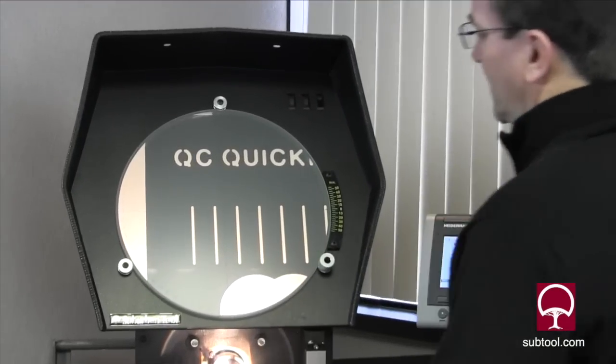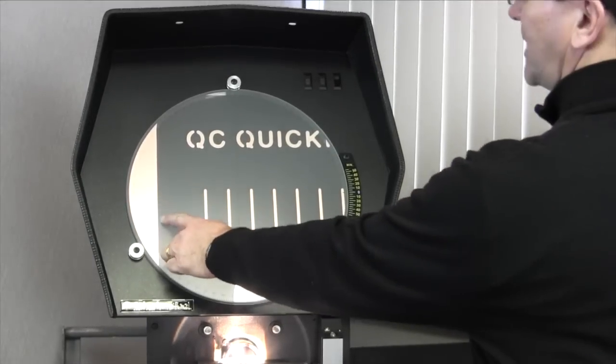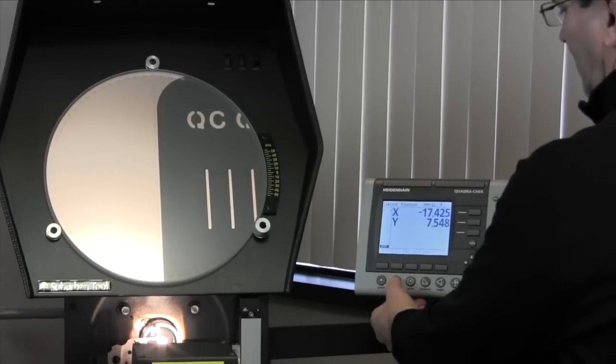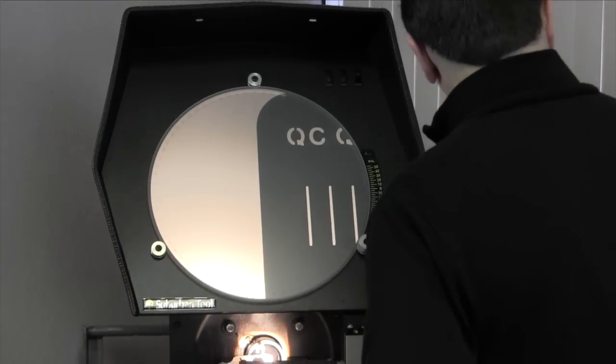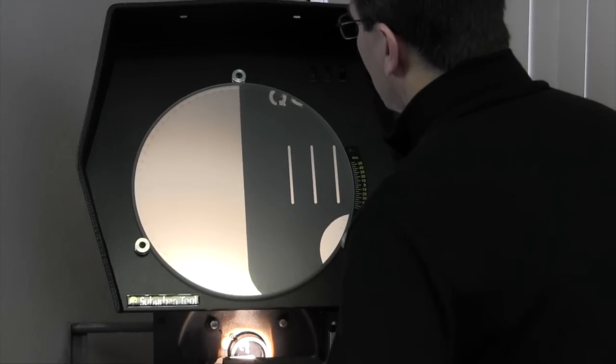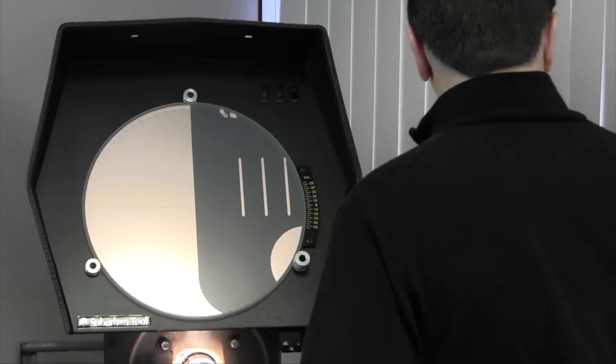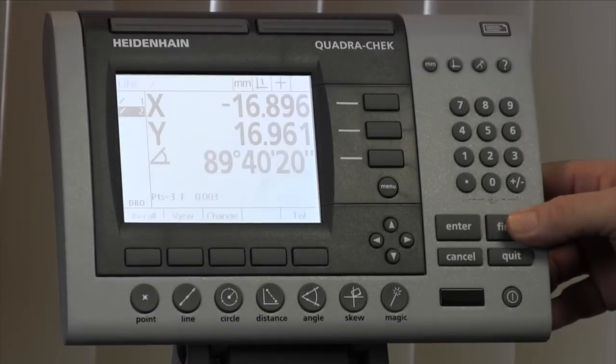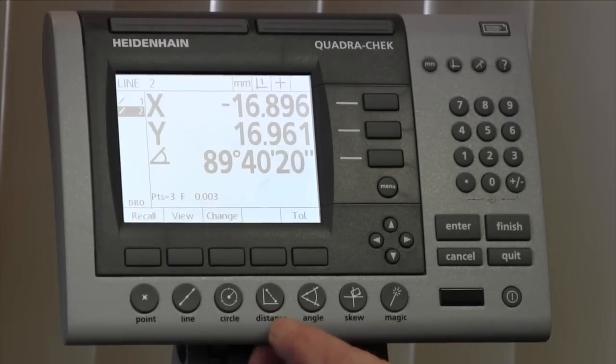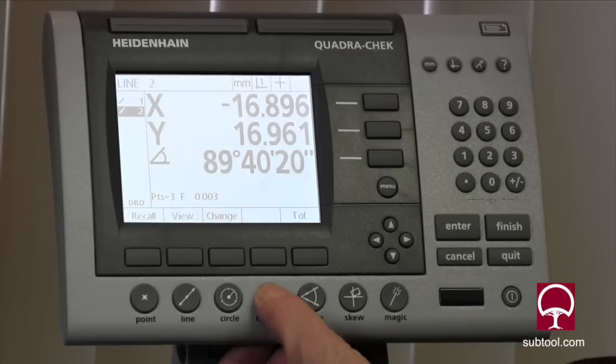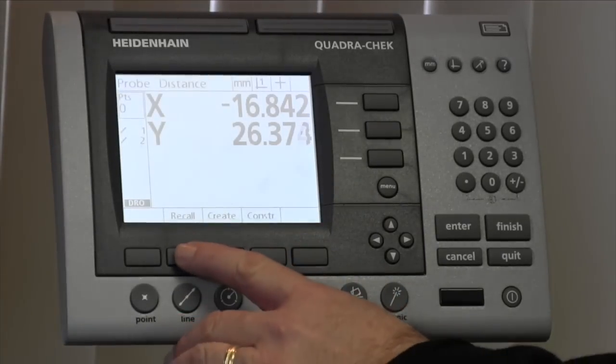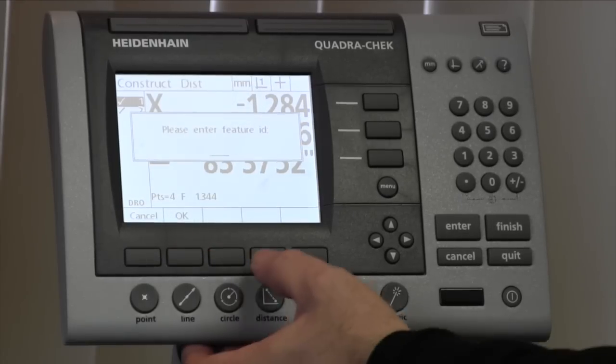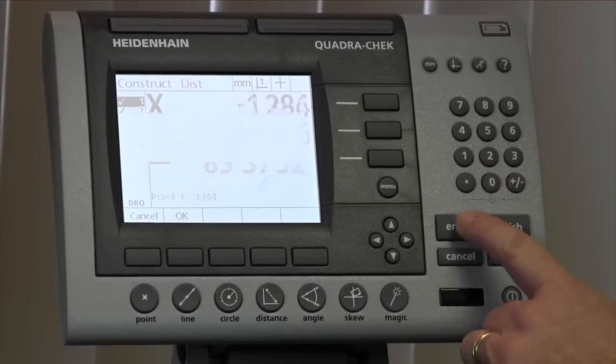Now, if we wanted to know the distance from that line that we just measured to this edge, for instance, on our part, we can come over to our edge here. We're going to take another line measurement, and pick up a couple lines along that edge, a couple points. So now we have that line. Then all we do is we come over, we've got a distance feature here. We select distance, and we're going to recall those two lines that we already did. Recall line one, enter. Recall line two.